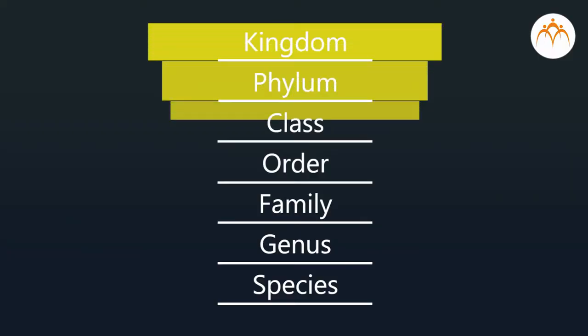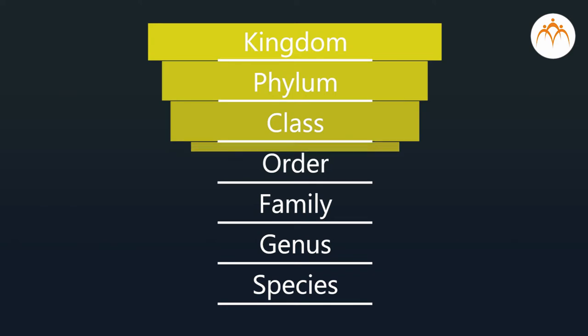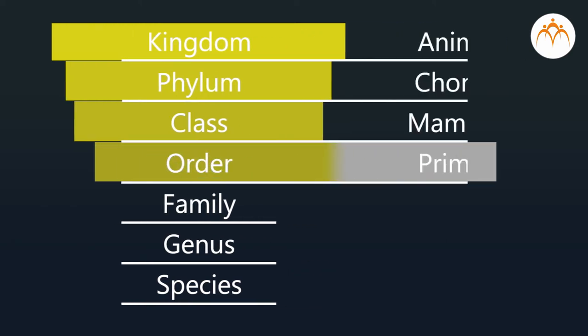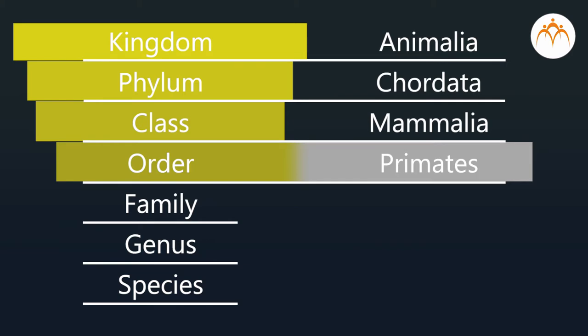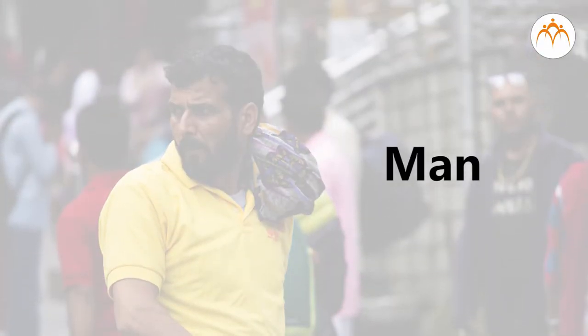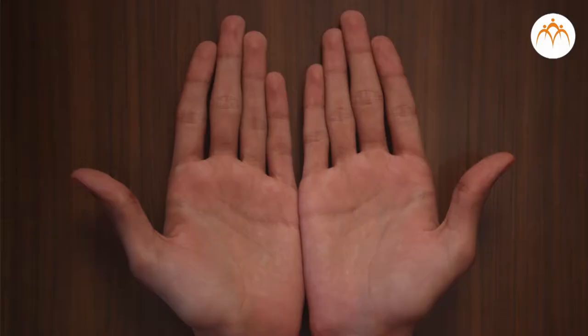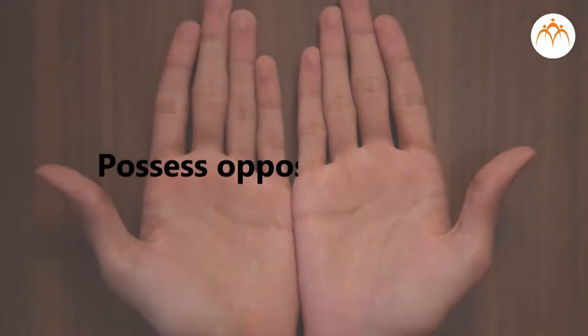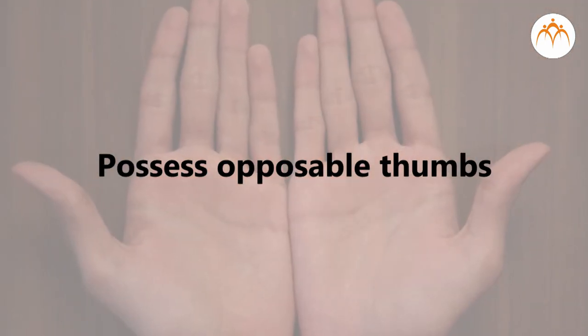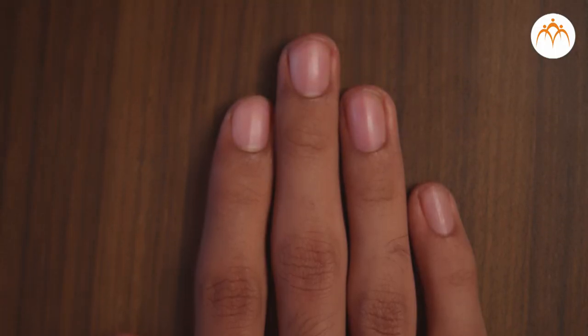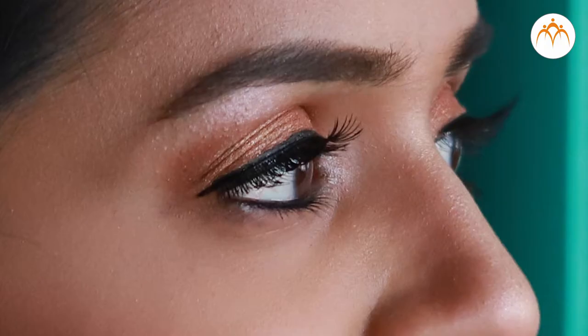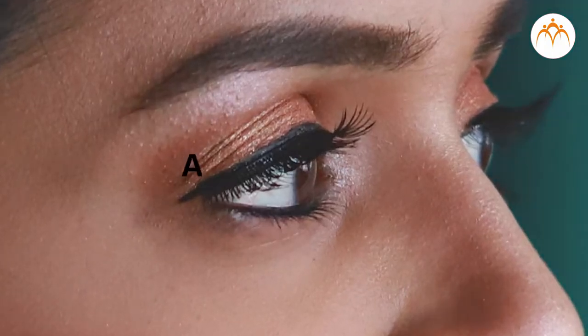From the order level, their groups become different. Man belongs to order Primates. Animals of this order possess an opposable thumb, have nails instead of claws, and have accurate vision.